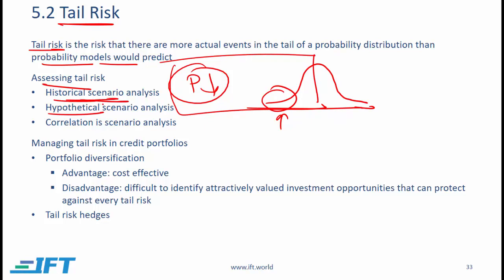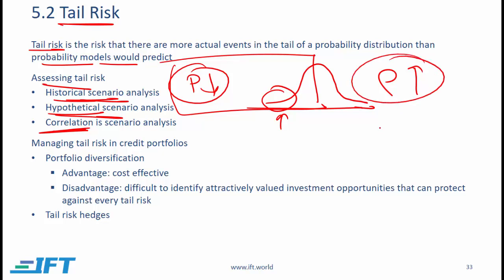Historical scenario analysis is based on what actually happened, but we can also create hypothetical scenarios — events that might happen but have not actually occurred. When performing scenario analysis, we need to pay close attention to correlation. During financial crises, the correlation between different types of bonds and sectors goes up and becomes close to one. For example, in the 2008-2009 crisis, bonds from seemingly unrelated sectors all started defaulting, implying high correlation that must be considered in scenario analysis.